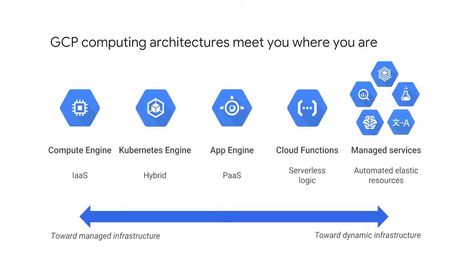Both sure beat the old way where you bought everything in advance based on lots of risky forecasting. As cloud computing has evolved, the momentum has shifted towards managed infrastructure and managed services. GCP offers many services in which you need not worry about any resource provisioning at all. They're easy to build into your applications and you pay per use.